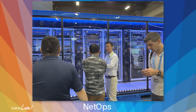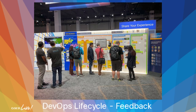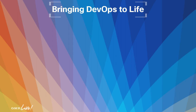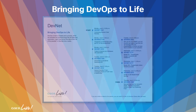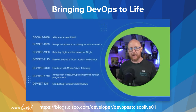We will provide you with a roadmap to DevOps at Cisco Live and share how to access that content through the Cisco Live on-demand library. We will also show you how to obtain free DevOps education from Cisco. The Bringing DevOps to Life learning map serves as a guide to optimizing your DevOps experience. See the URL at the bottom of the screen for a blog that describes and links to the DevOps learning map.